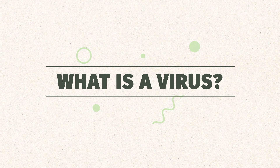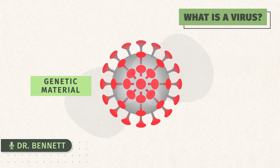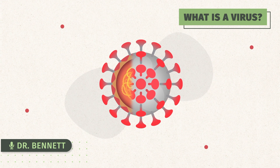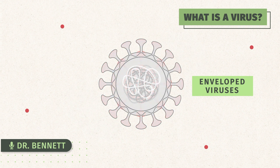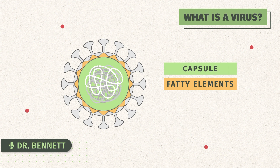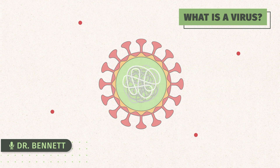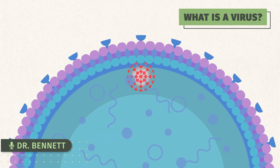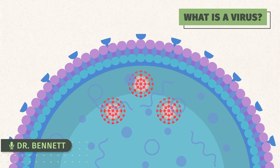What is a virus? A virus is a very small particle of genetic material packaged in a protein-based capsule. The enveloped viruses, which SARS-Coronavirus-2 is one of, have a membrane around that capsule made up of fatty elements. Sticking outside of that envelope are proteins, which are critical for how the virus gets into the host. A virus cannot copy itself without being inside of a host cell.